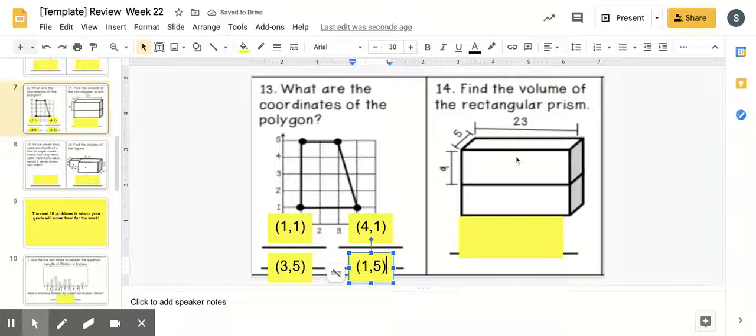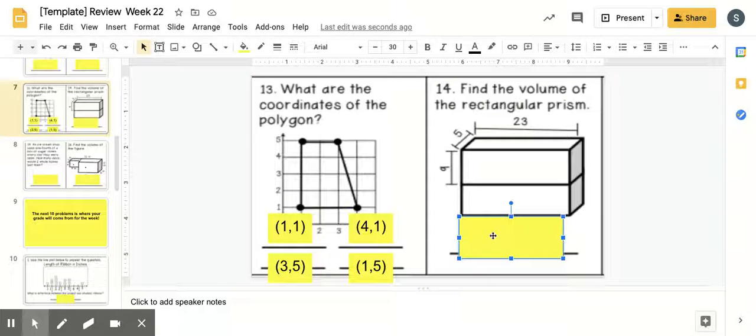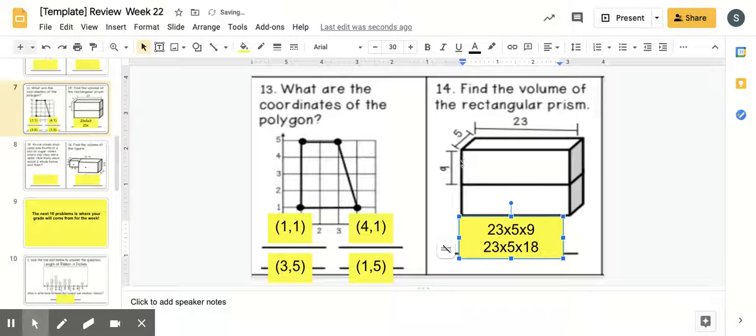The volume of this prism. Volume is length times width times height. So, you're going to work out 23 times 5 times 9. I'm not going to tell you what that answer is. You need to work it out on your papers. Don't just write 23 times 5 times 9, actually work it out. But, that's not your final answer. Because then, you're either going to add it or multiply by 2. Or some of you might want to do 23 times 5 times 18. Because you have 9 here and another 9 here. Either take this first one and multiply it by 2, or you can work out the way of the second one. Your choice.